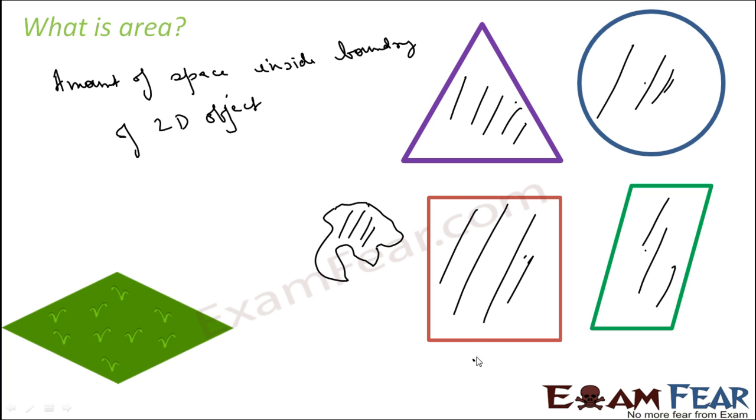We know the area of popular figures. For example, area of rectangle we know is length into breadth. We know area of square, if it is square, then it is side square. If it is circle, it is pi r square.